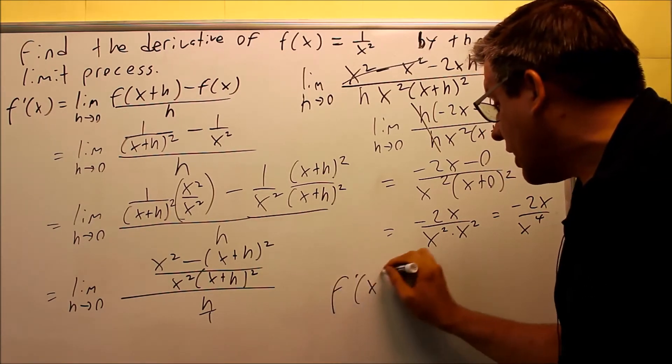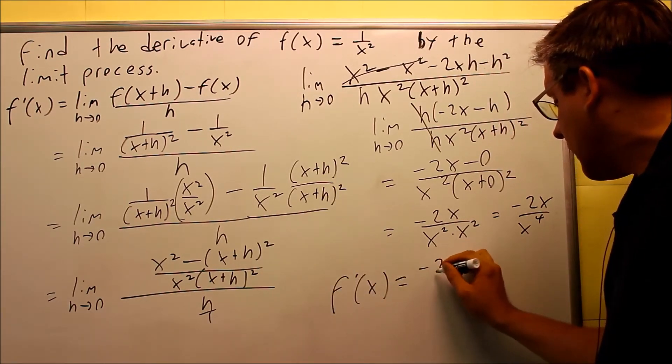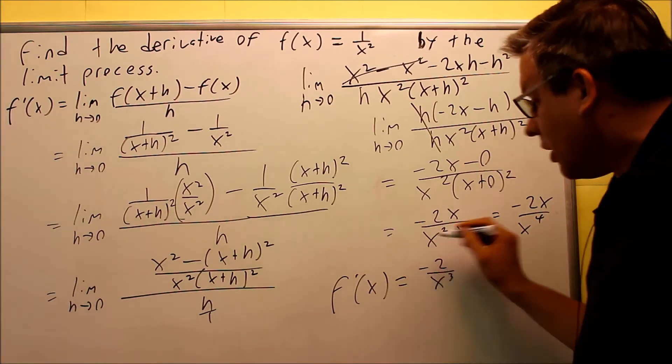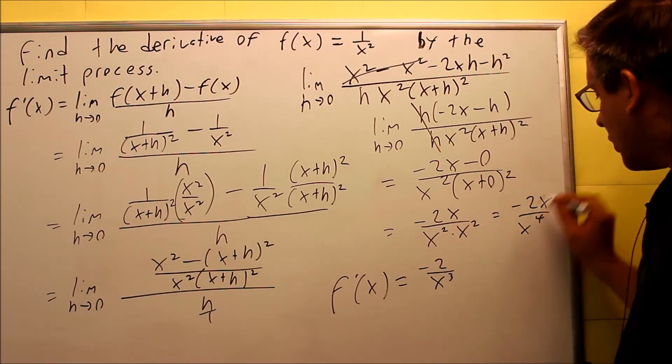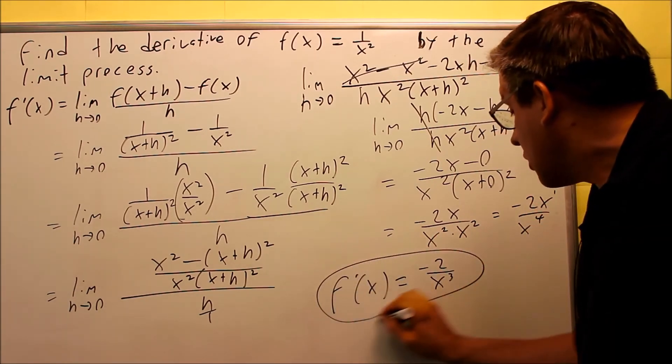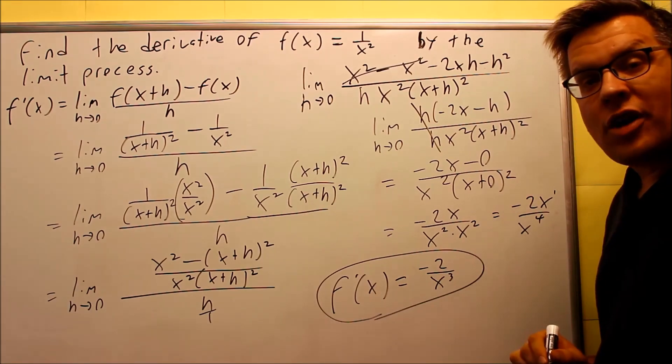This means I can write that as negative 2x over x to the fourth. Finally, I can write my answer for the derivative, negative 2 over x cubed. That's going to be my final answer here, because I did that. I subtracted the power of the x's here, reduced that. So negative 2 over x cubed is the final answer.